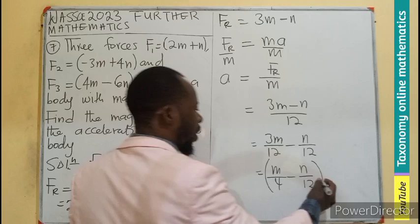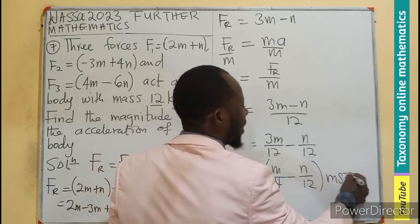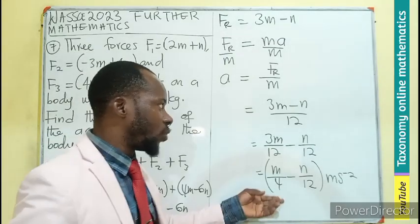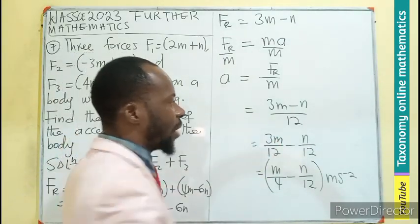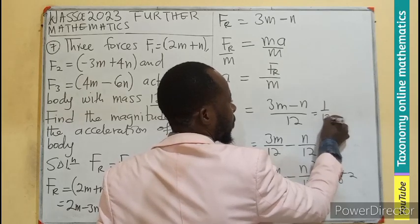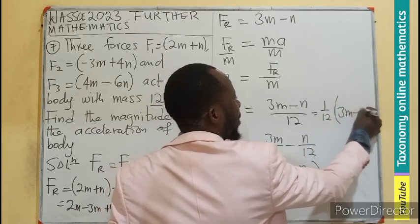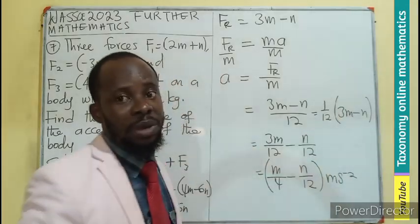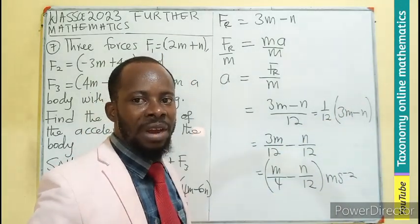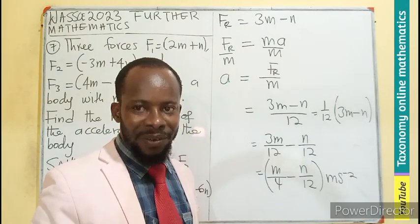Don't forget acceleration is meter per second squared. So this becomes the acceleration. You can decide to take your 12 out here as a fraction multiplying 3m minus n. This will also be the final answer. You can present this or present this as your final answer.